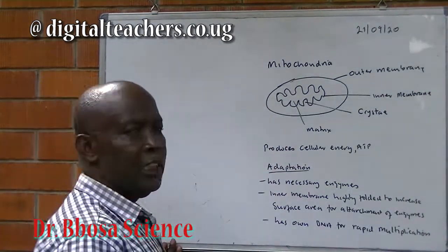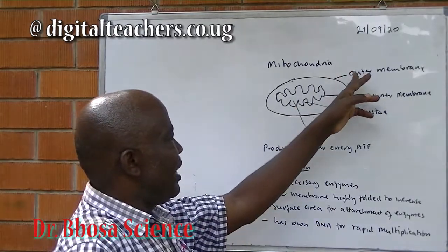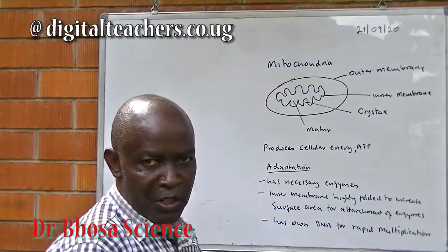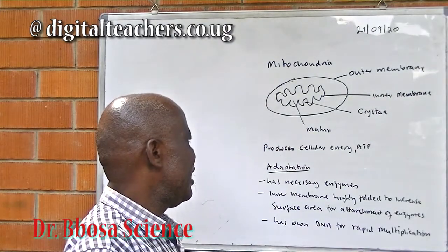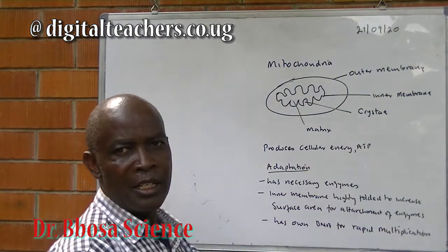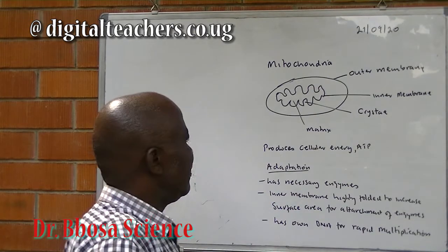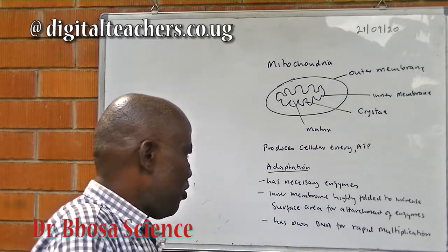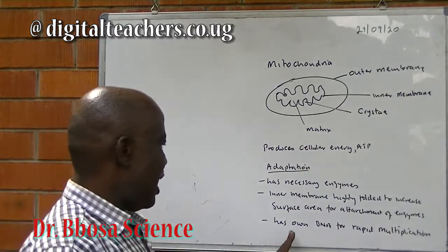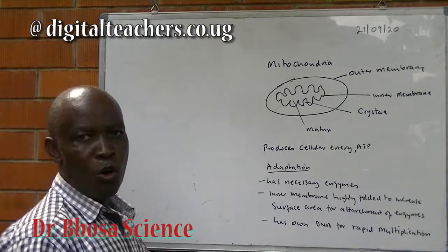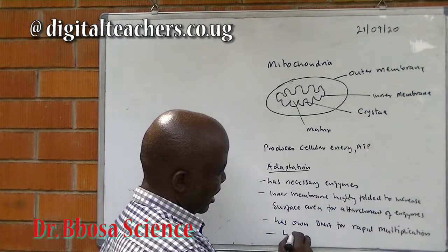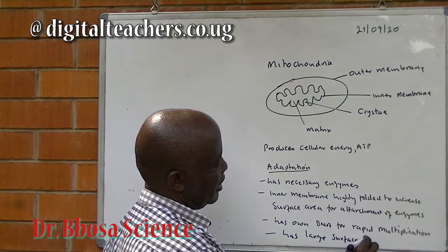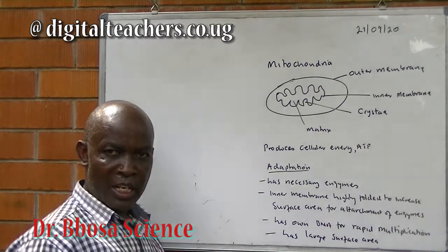The mitochondria is an organelle for respiration. It is bound by an outer and an inner membrane. The inner membrane is folded to form cristae. Within the matrix you have ribosomes and circular DNA. It produces cellular energy in the form of ATP. Adaptations to its function: it has the necessary enzymes; the inner membrane is highly folded to increase the surface area for attachment of enzymes; it has its own DNA for its own multiplication; and it has a large surface area which enables diffusion of gases.